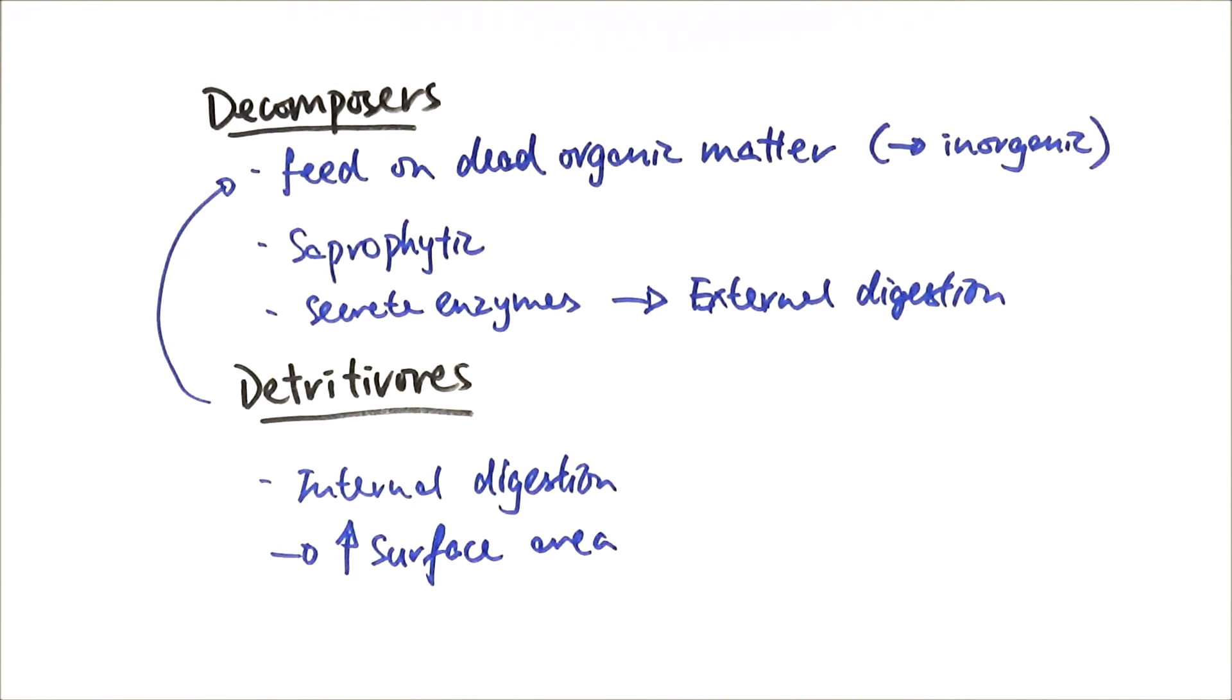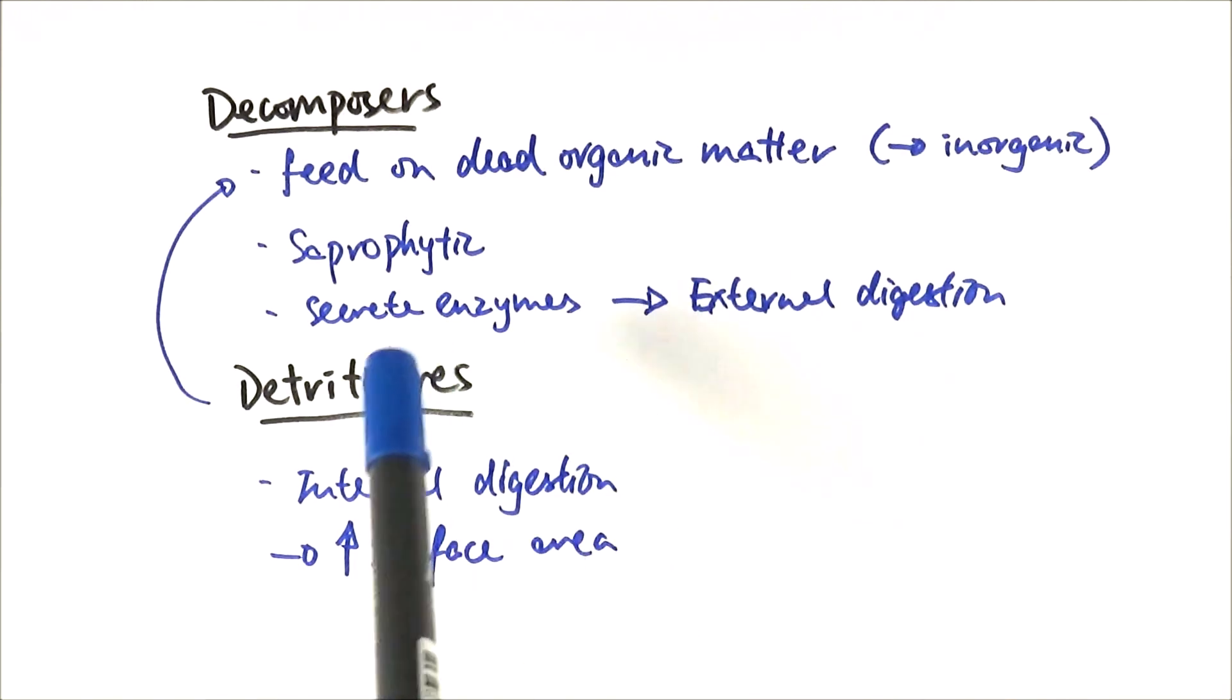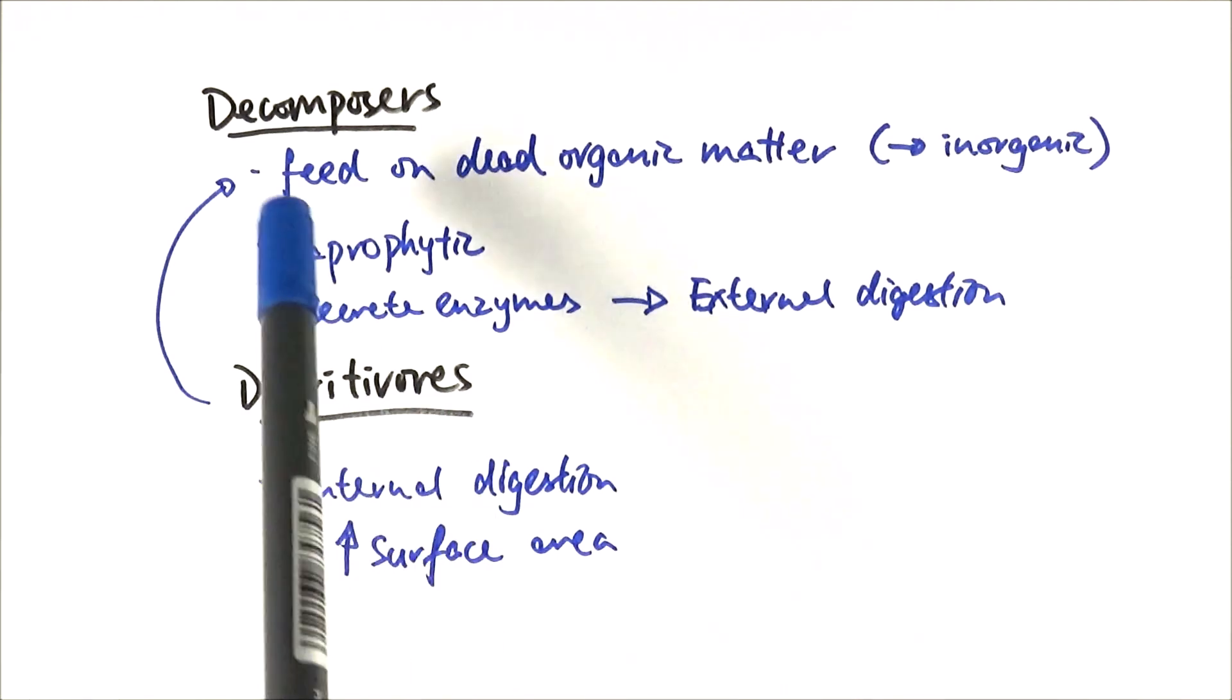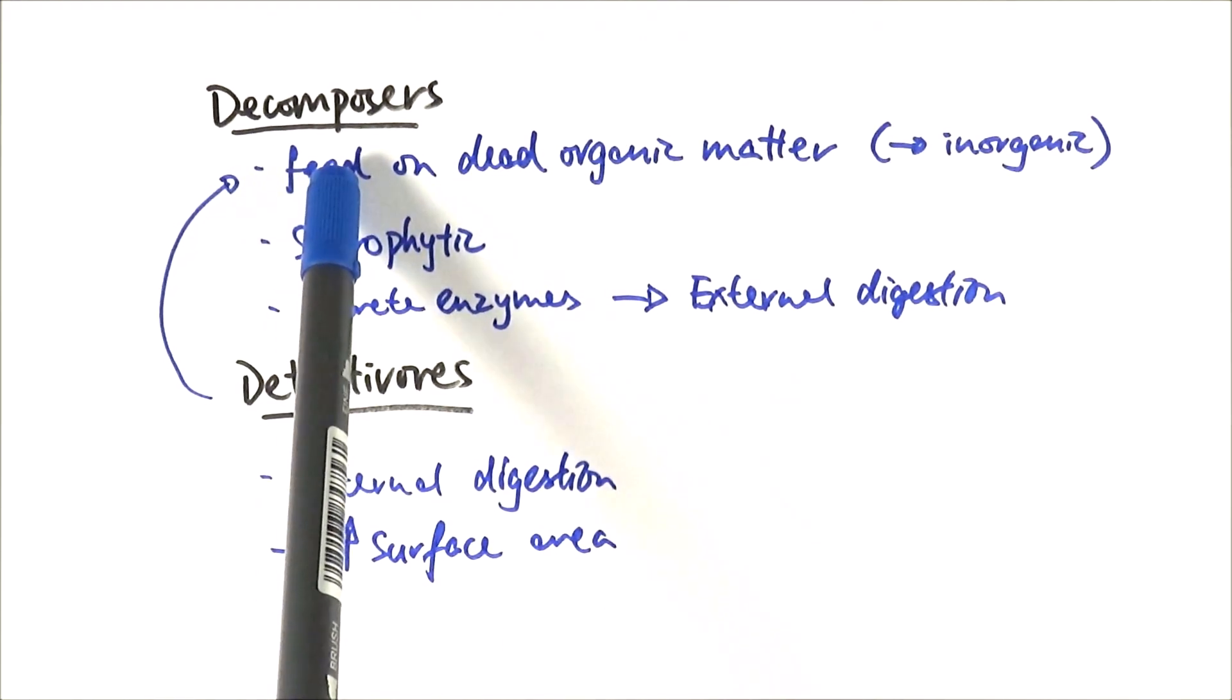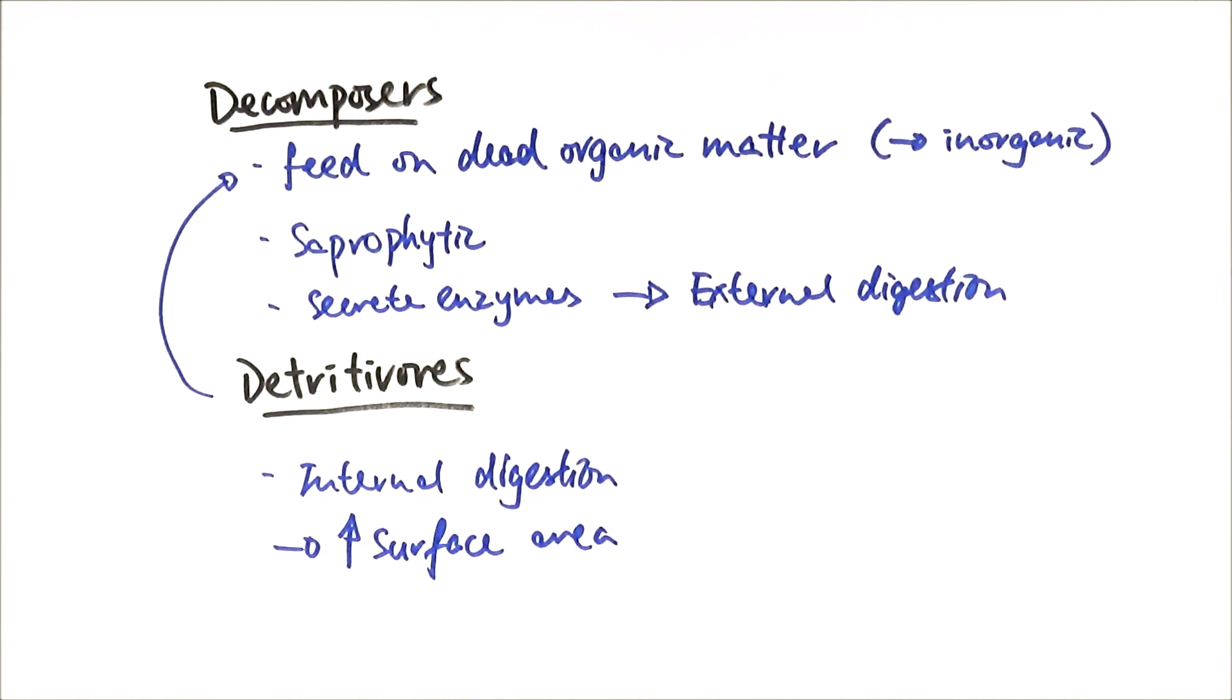Examples would include maggots or woodlice. They first munch on the food or a dead chicken, and after they've munched on it, the surface becomes rough and increases the surface area. Therefore, there's more surface area for the bacteria decomposers to actually work on. They increase the surface area to speed up the process of decomposition.